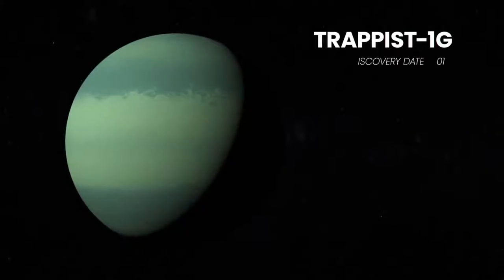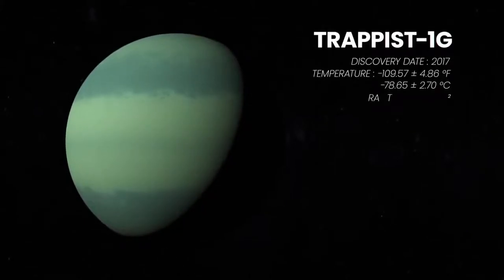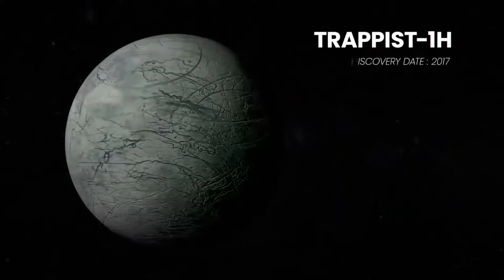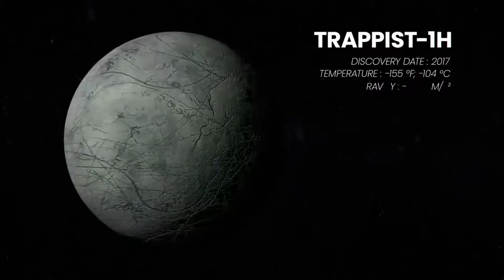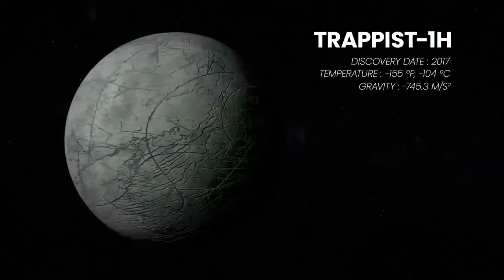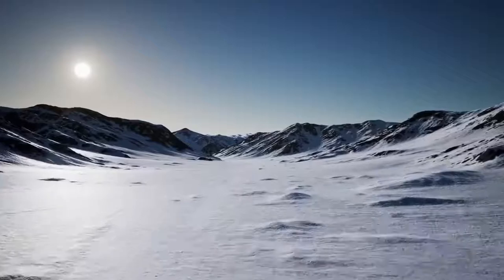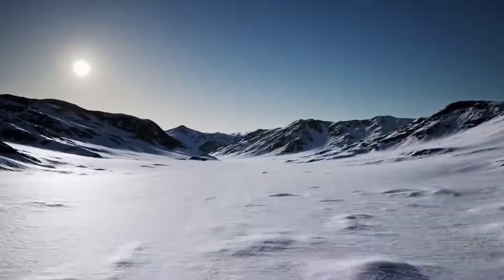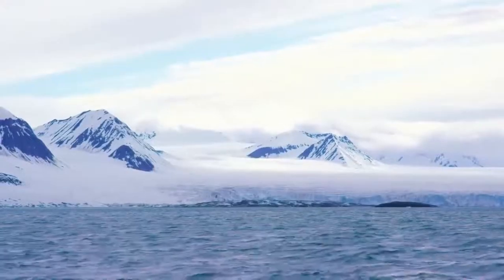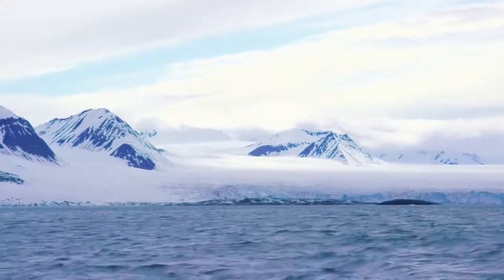Trappist-1g could also have a thick global water ocean covered by an atmosphere containing hundreds of bars of abiotic oxygen. And Trappist-1h is a cold world with temperatures around minus 155 degrees Fahrenheit, similar to the Earth's South Pole, and is likely covered in ice. However, scientists say it could possibly hold liquid water.